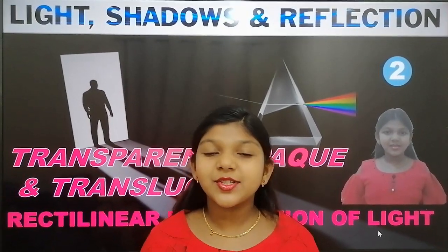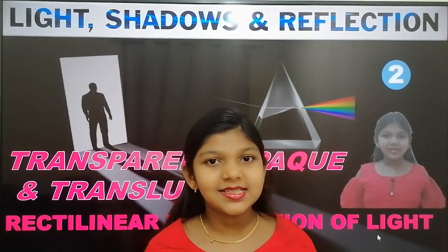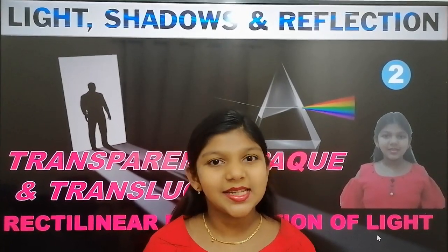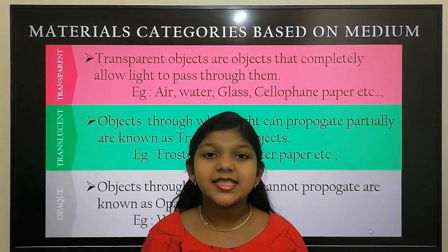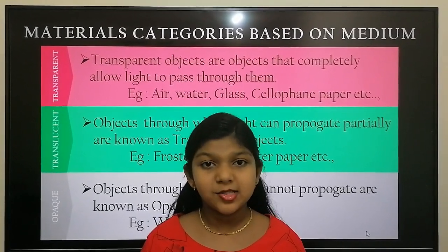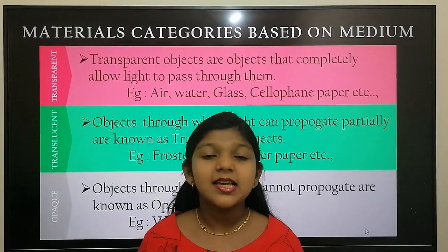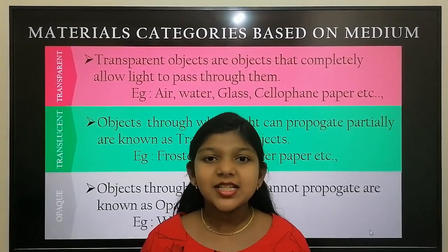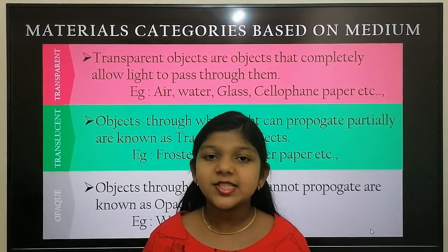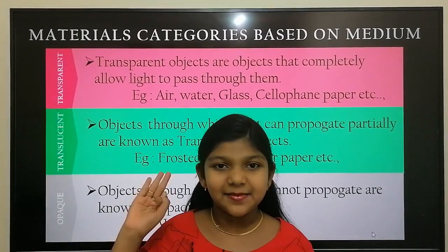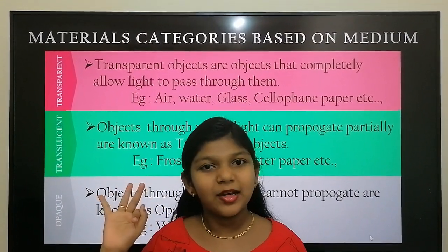Now we are going to see how objects behave with light — that is, transparent, translucent, and opaque objects. We may observe that some objects allow light to pass through them completely, whereas some objects block it completely. On this basis we can categorize the materials or objects into three types: transparent, translucent, and opaque objects.